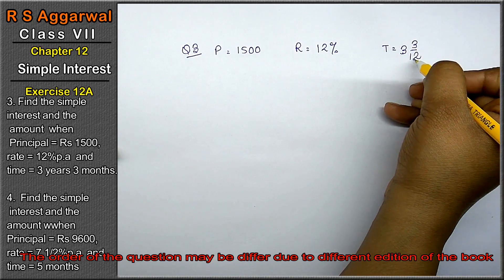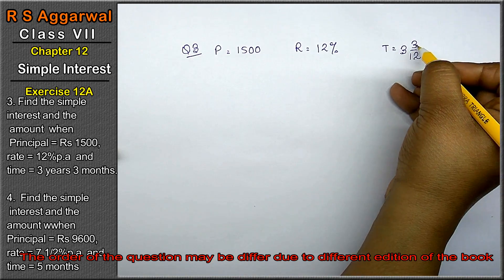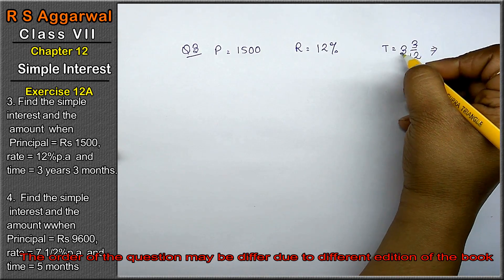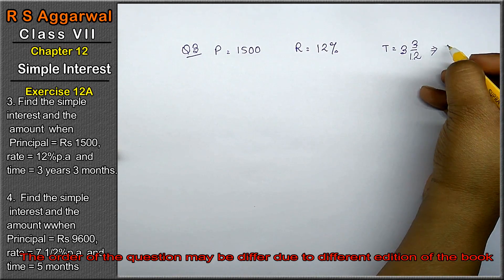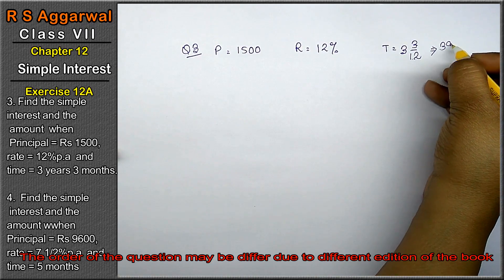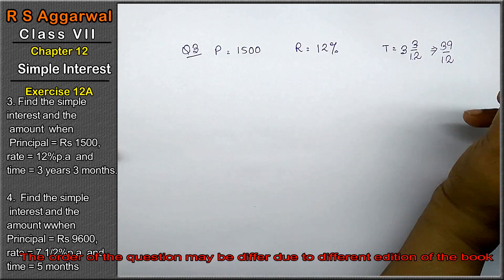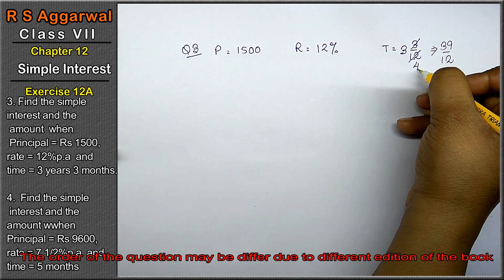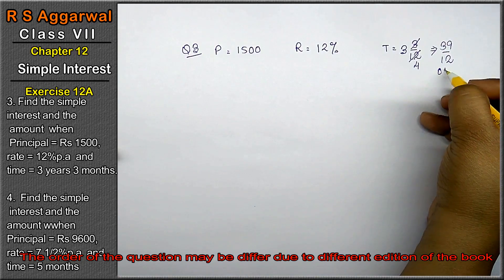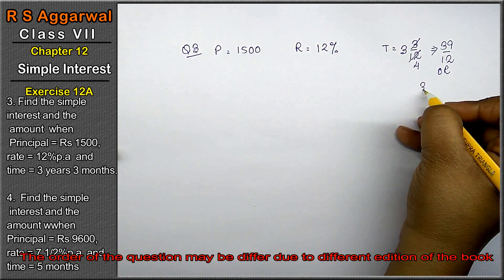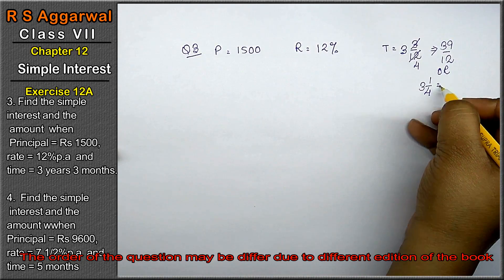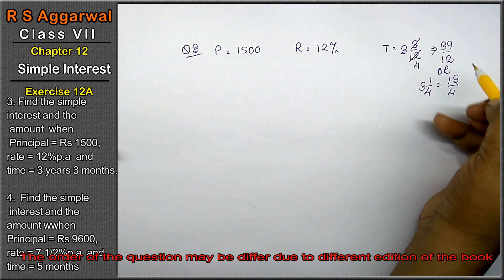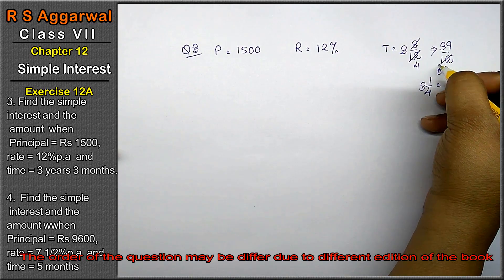Time conversion: 3 years is 36 months, plus 3 months equals 39 upon 12. This simplifies to 3 whole 1 upon 4, or 13 upon 4 years.